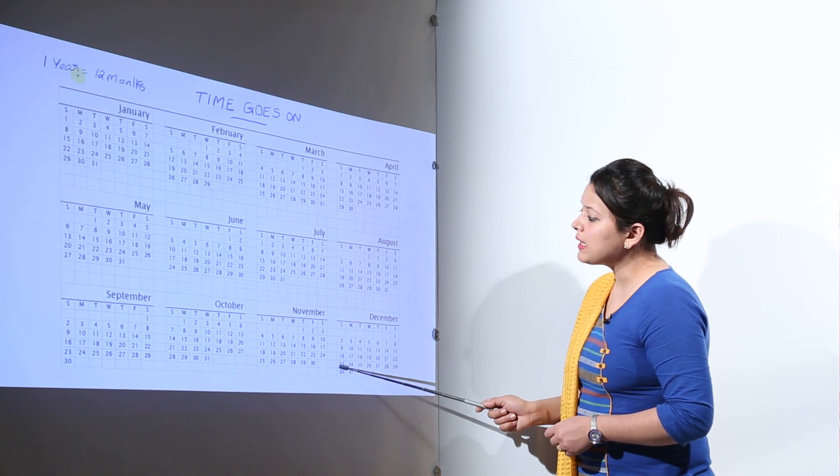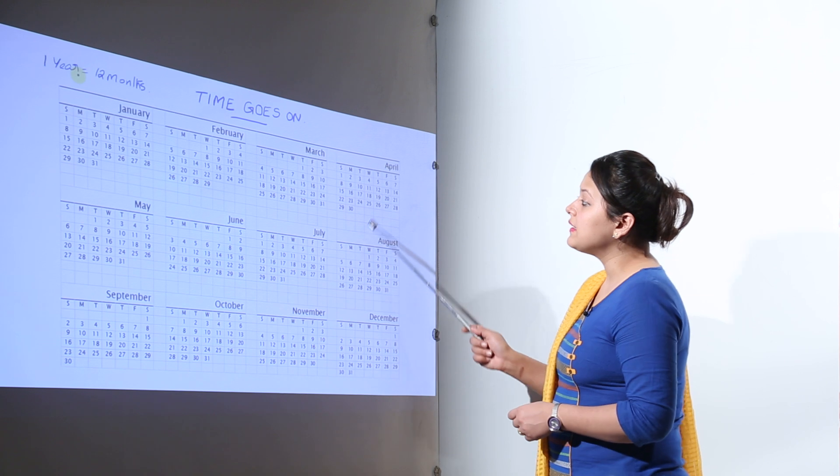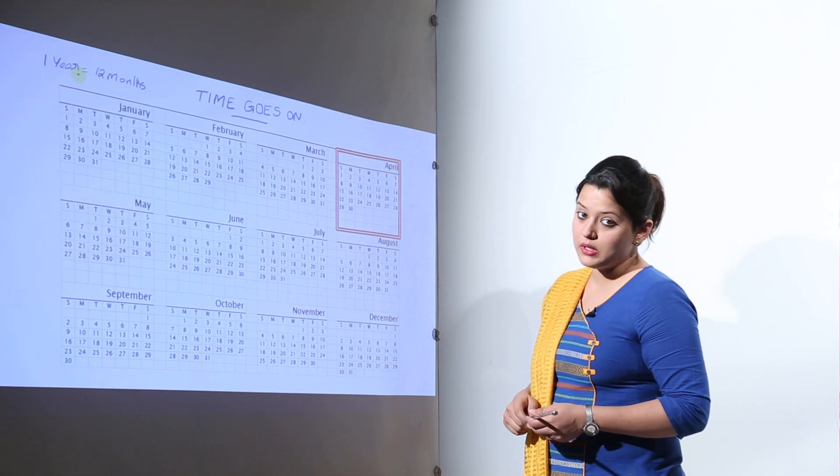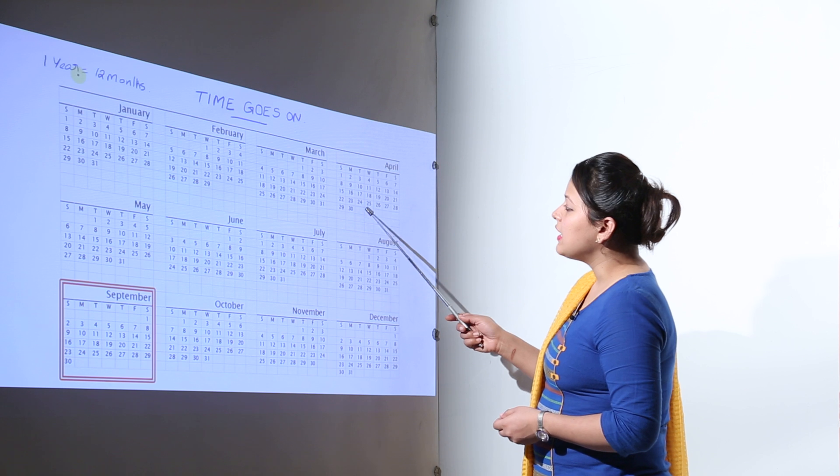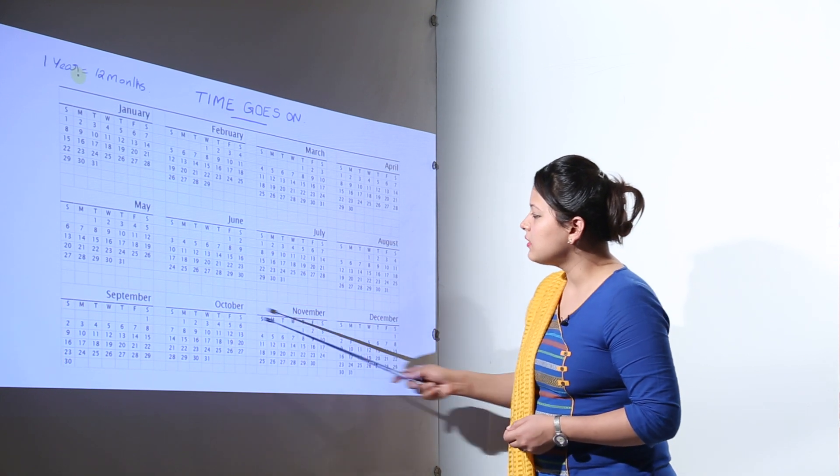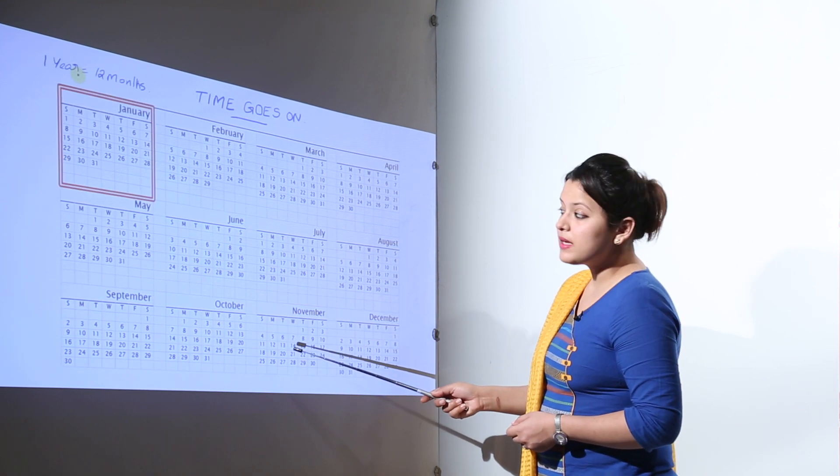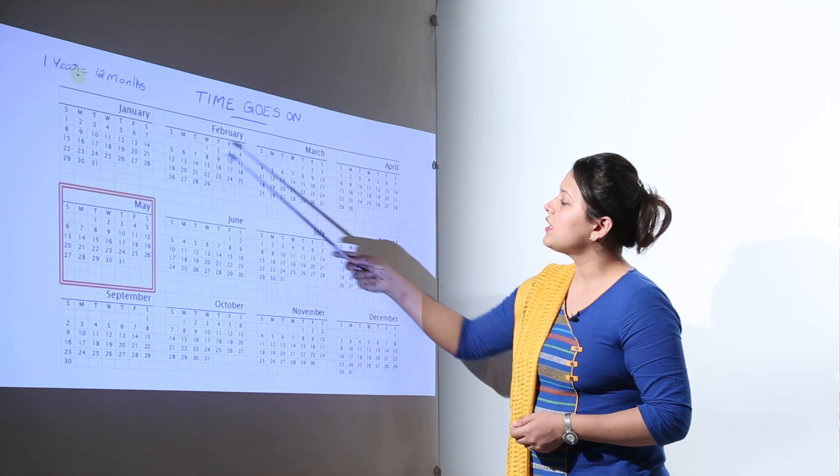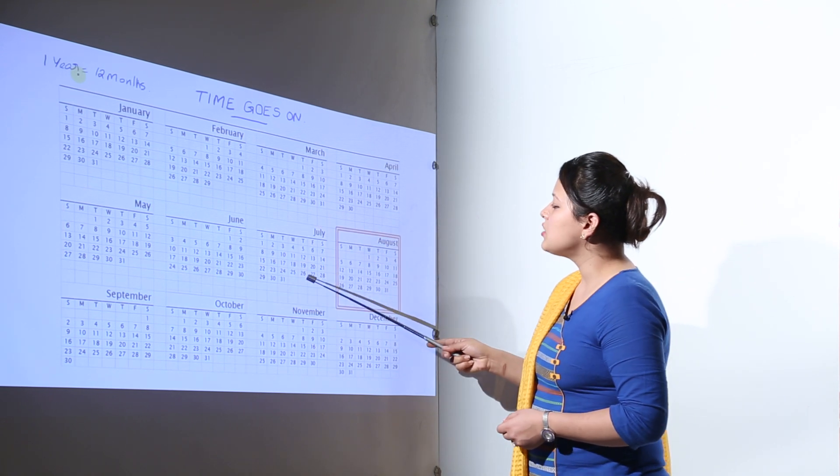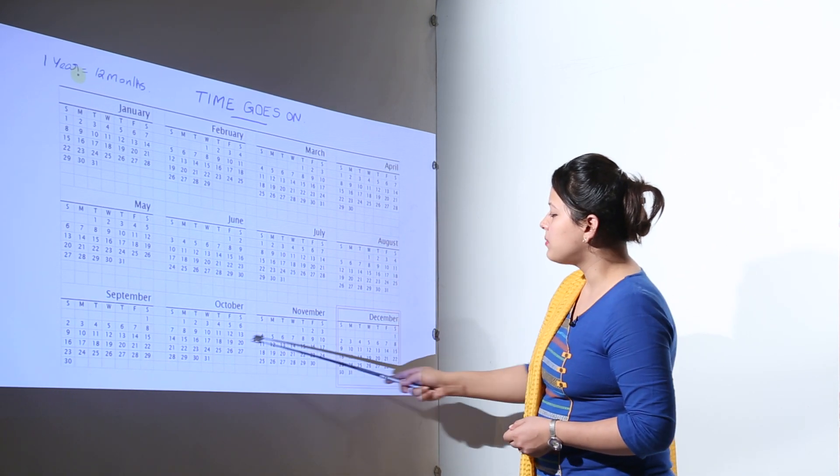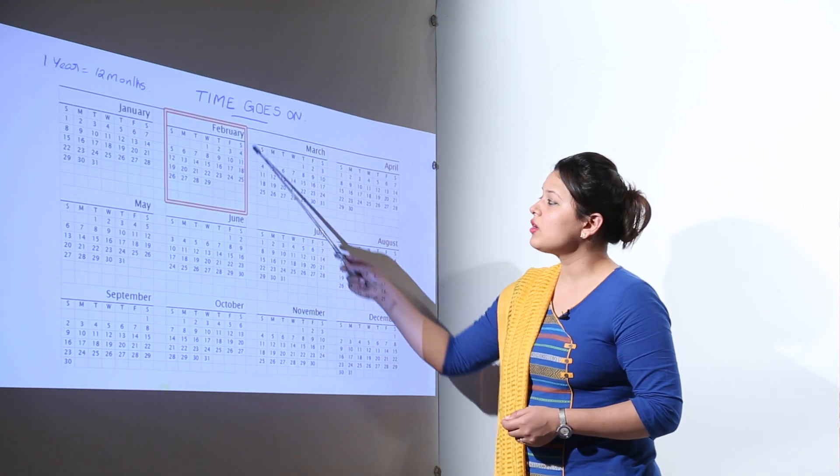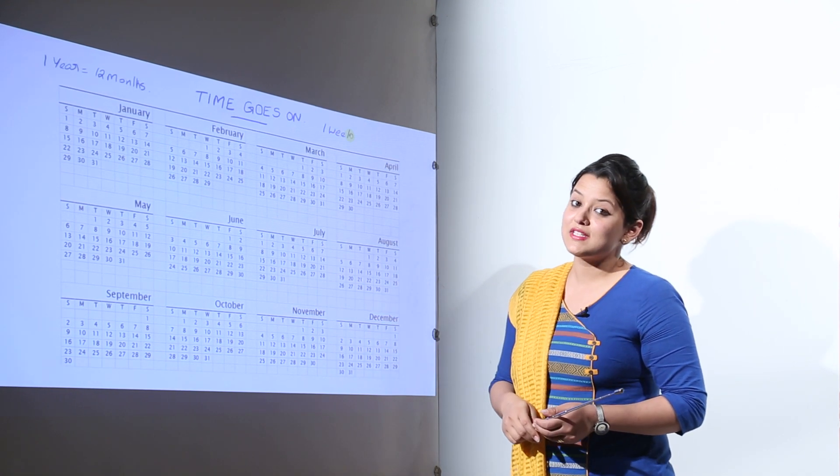Now you can see over here, there are some months that have 30 days only. And those months are April, June, September and November. There are some months that have 31 days, January, March, May, July, August, October and December. And February is the shortest month of the year every time.